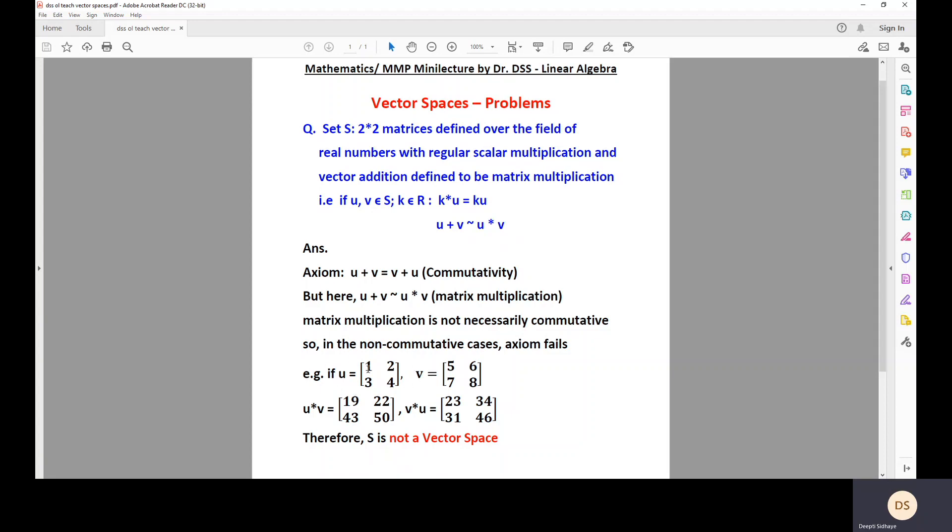Let U be the matrix 1, 2, 3, 4. Now, here you can see it is indeed a 2 by 2 matrix, 2 rows, 2 columns. Let us take another matrix V as 5, 6, 7, 8. Again, 2 rows, 2 columns. So it's also 2 by 2 matrix.